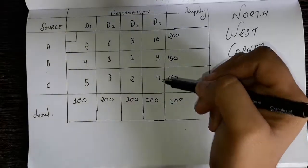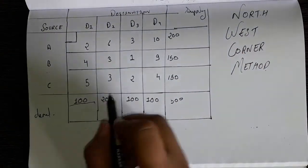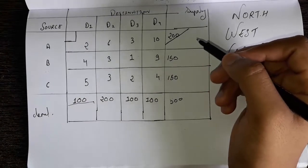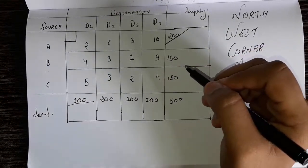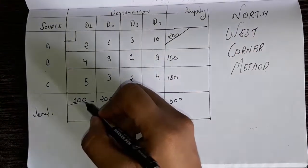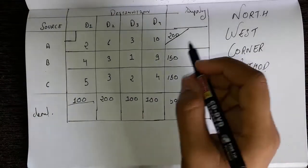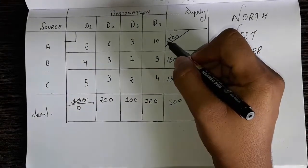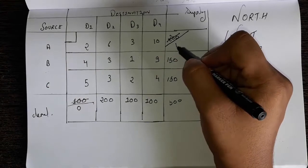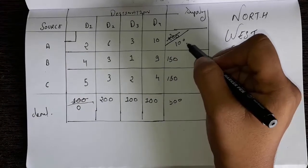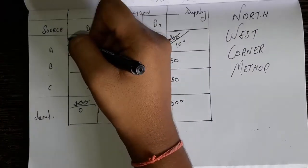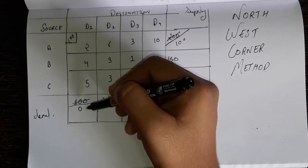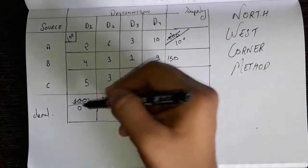Now check the supply and demand of this corner. The demand is 100 and the supply is 200. You have to subtract the supply or demand, whichever is less. So 200 minus 100 is 100. This 100 now becomes 0 and this 200 now becomes 100 because there is 100 left.